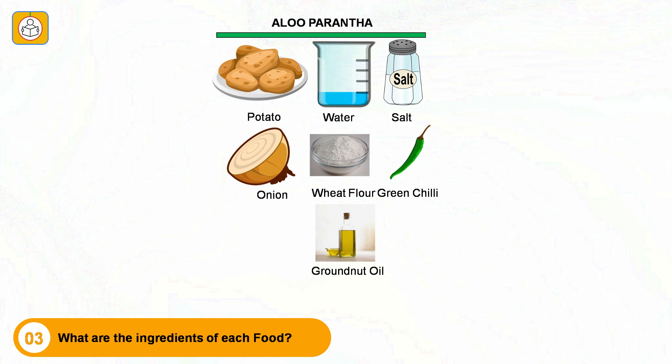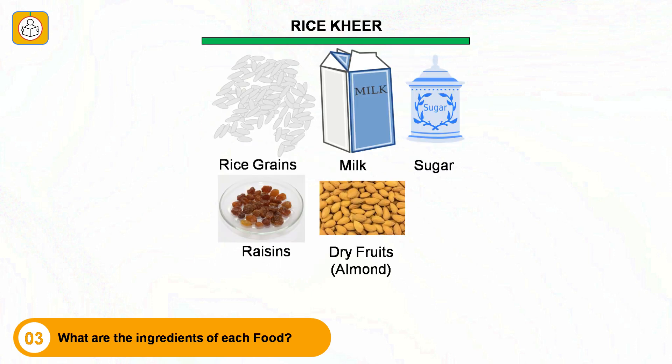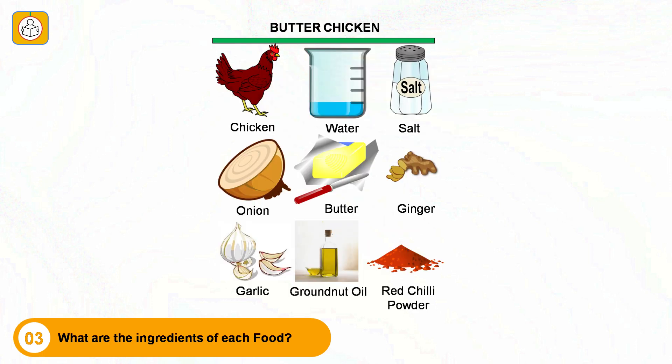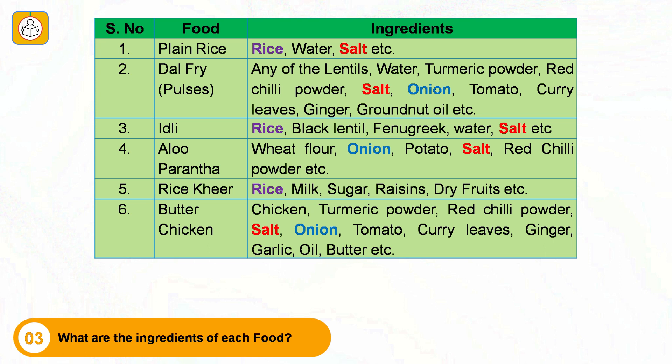Aloo paratha consists of potato, water, salt, onion, wheat flour, green chili and groundnut oil. Rice kheer, a popular sweet dish in India, consists of rice, milk, sugar, raisins (kishmish) and dry fruits like almonds. Butter chicken, a non-vegetarian dish, consists of chicken, water, salt, onion, butter, ginger, garlic, groundnut oil and red chilli powder. The number of ingredients vary from kitchen to kitchen. Most food items have many common ingredients.